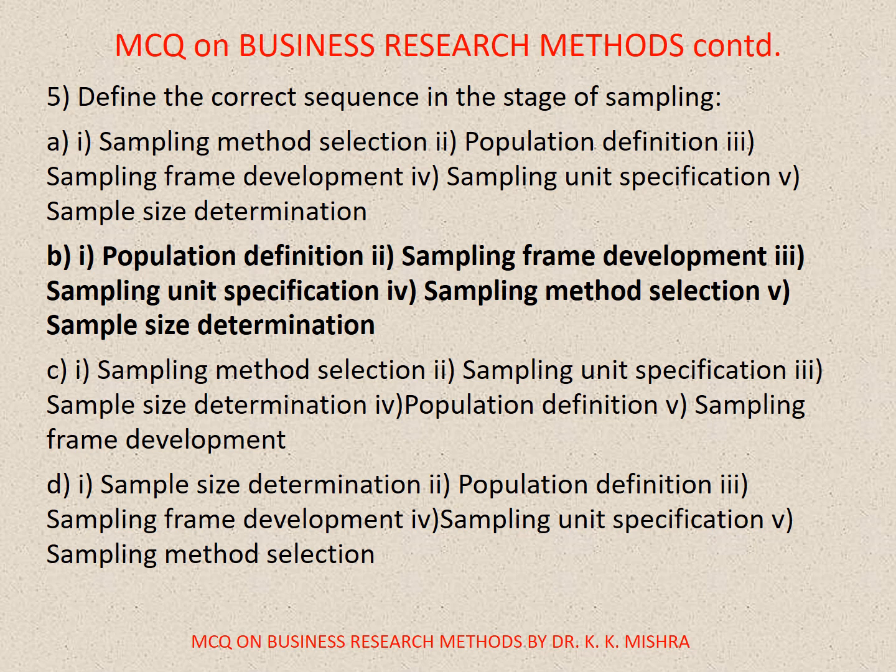Question number 5. Define the correct sequence in the phases of sampling. The correct option is B. First is population definition, second sampling frame development, third sampling unit specification, fourth sampling method selection, fifth sample size determination. You must go through all the options so that you are able to decipher and analyze the options practically.